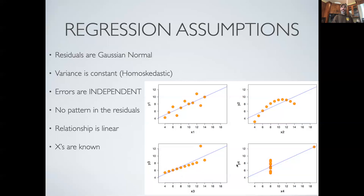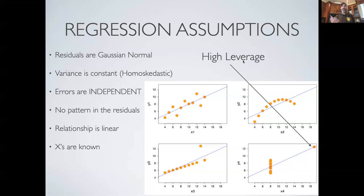Y4 is an interesting case. I would argue it doesn't necessarily violate the assumptions of regression, but you have to treat that model with care because this one point at high X and high Y has extremely high leverage. We've got all the data points clustered at one value, and while you might see constant variance and independent errors, this one point is going to have a disproportionate impact on your estimate of the slope and the intercept.